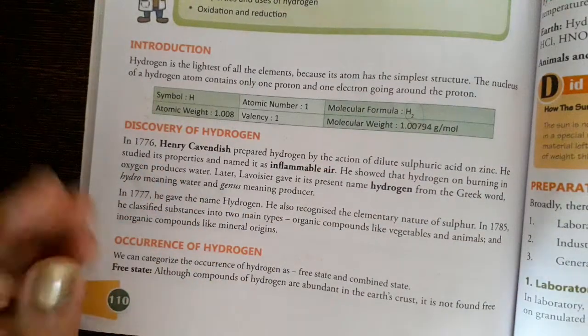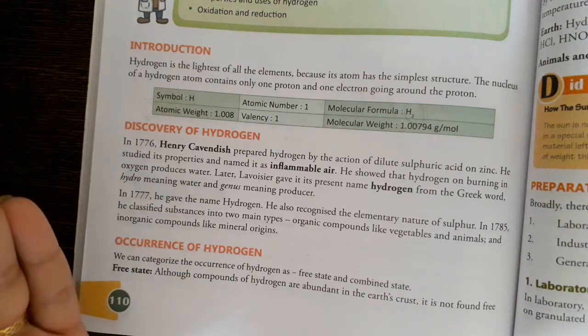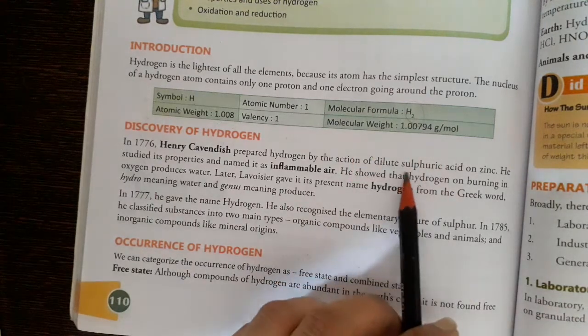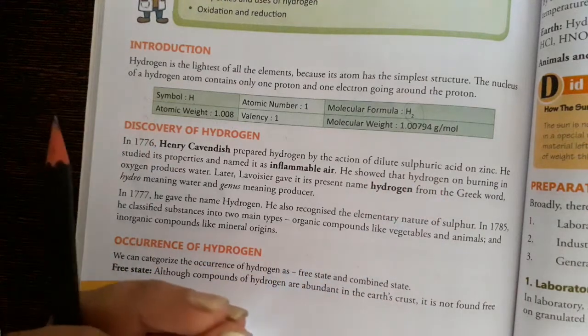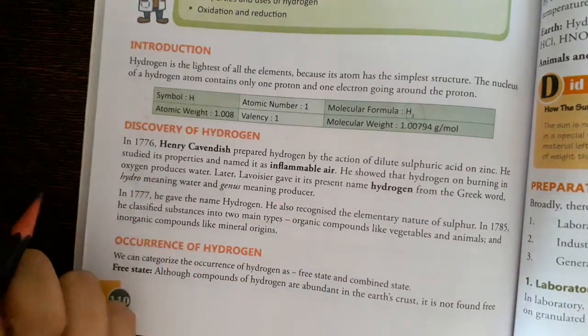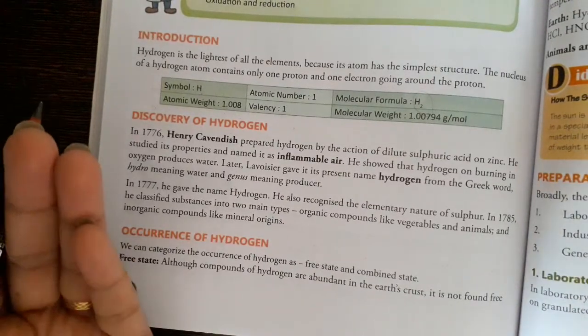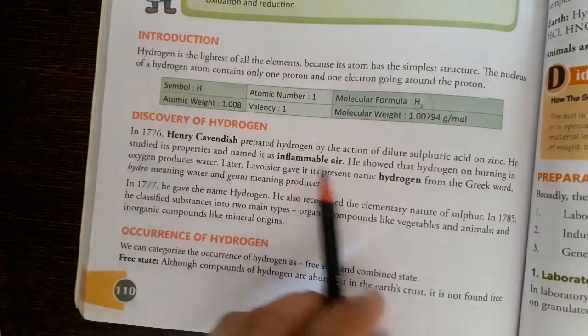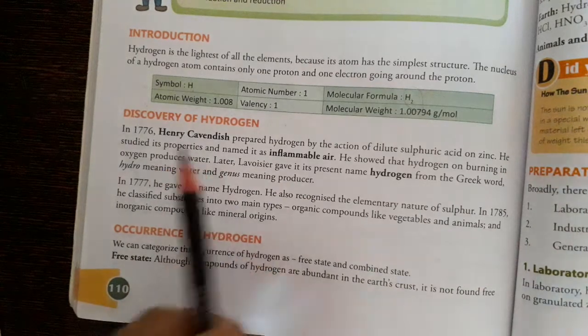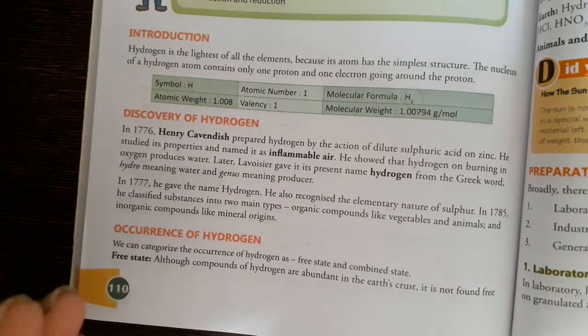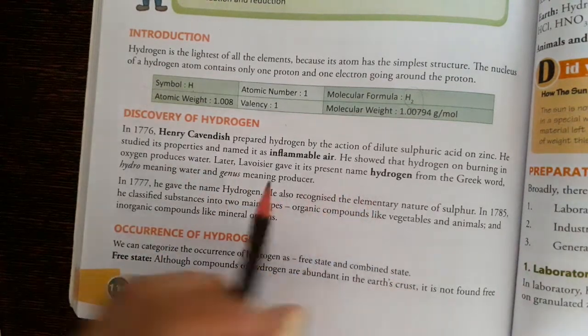Discovery of hydrogen: In 1766, Henry Cavendish prepared hydrogen by the action of dilute sulfuric acid on zinc. Zinc plus dilute sulfuric acid produces hydrogen water. Later, Lavoisier gave it the present name hydrogen.